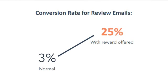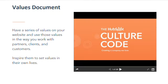Normally, our conversion rate for review email sends stands at around 3%, but when a reward was offered it jumped to 25%. Creating a campaign concept around these goals is the easiest way to communicate them, but you can also communicate them through a values document. Having a series of values on your website and using those values in the way you work with partners, clients, and customers — inspiring them to set values in their own lives. It can be as little as an external marketing campaign, or as big as how you start from the foundational work as a company to set your own goals.